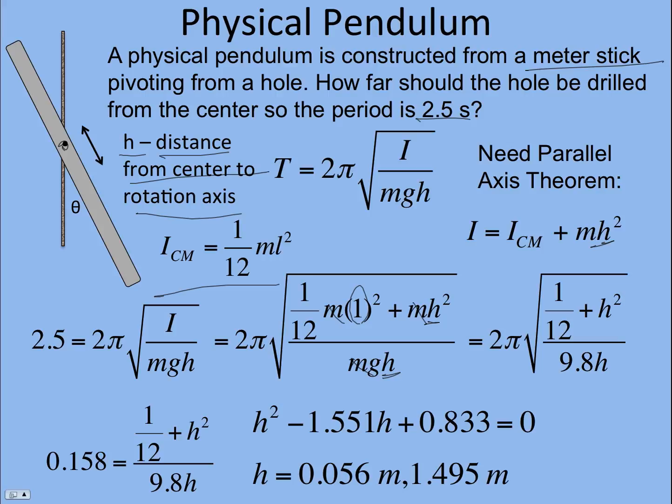And you can see you get a quadratic to solve for h. You get two positive answers. Which should we pick? But you can see clearly from the drawing here and the fact that we have a hole in the meter stick, it's got to be this. This would be off the meter stick.